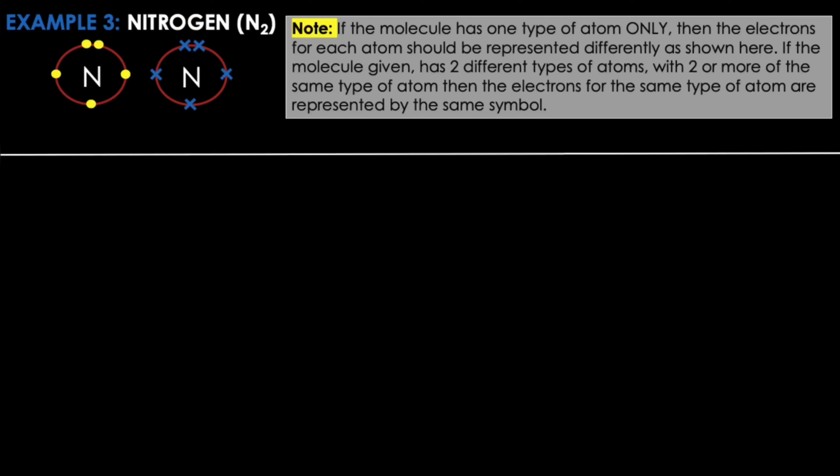For the displayed formula, double bonds are represented as two parallel lines. Example three: nitrogen. As the molecular formula for nitrogen is N2, two nitrogen atoms are used. The electrons on the outer shell of each nitrogen atom are drawn — one represented as circles and the other as crosses. Note: if the molecule given has one type of atom only — such as Cl2, Br2, F2, or N2 — then the electrons for each atom should be represented differently, with one using circles and the other using crosses.